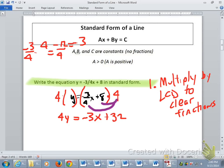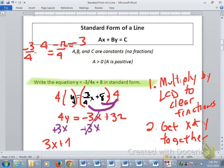Once we have the fractions cleared, now we need to go back to the same thing we did last time. We need to get x and y on the same side. Let's see - we're going to add the three x to both sides. And that's going to leave us with three x plus four y equals 32.